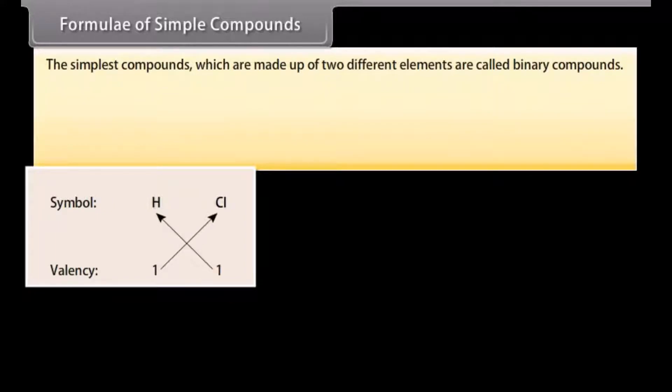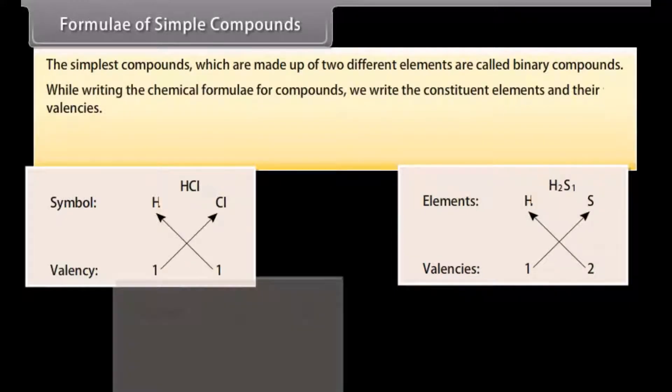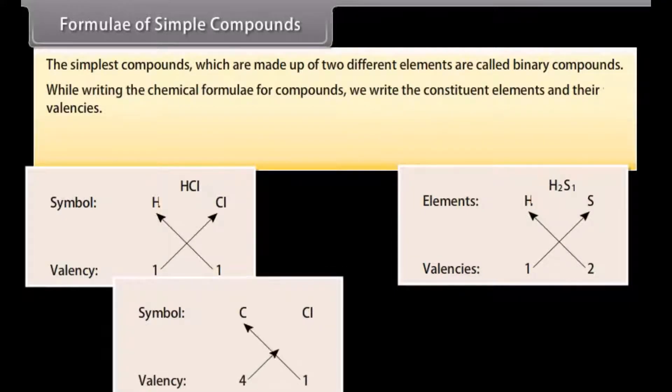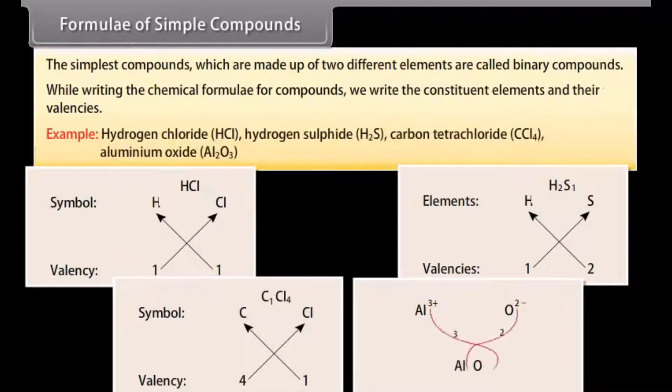Formula of simple compounds: The simplest compounds which are made up of two different elements are called binary compounds. While writing the chemical formula for compounds, we write the constituent elements and their valencies. Examples: hydrogen chloride (HCl), hydrogen sulfide (H2S), carbon tetrachloride (CCl4), aluminum oxide (Al2O3).